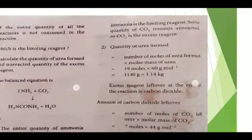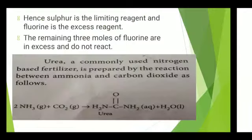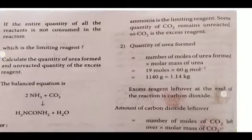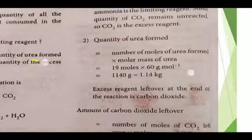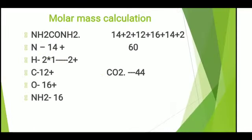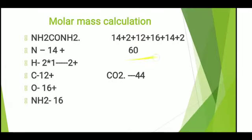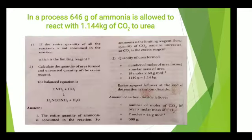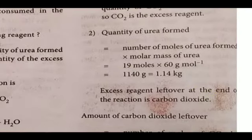Second question: calculate the quantity of urea formed and the unreacted quantity of the excess reactant. Quantity of urea formed = moles of urea × molar mass of urea = 19 moles × 60 g/mol = 1140 grams = 1.14 kg. The molar mass of urea (NH₂CONH₂) is: 14 + 2 + 12 + 16 + 14 + 2 = 60 g/mol. The excess reagent remaining is carbon dioxide.